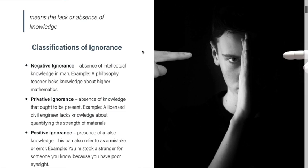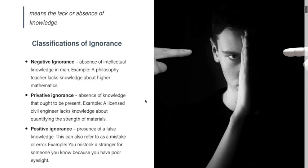The second classification is privative ignorance: the lack of knowledge of something which one should know but does not. The third is positive ignorance: the presence of false knowledge, which can also be referred to as a mistake or error. For example, you mistake a stranger for someone you know because of poor eyesight. There is something known, but that knowledge is false.